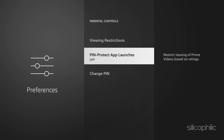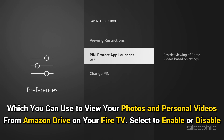Next, you have PIN Protect Prime Photos App. This requires your PIN to open the Prime Photos App, which you can use to view your photos and personal videos from Amazon Drive on your Fire TV. Select to enable or disable.